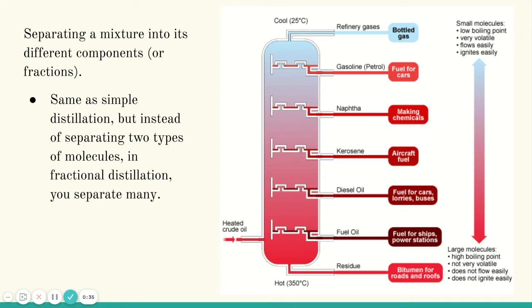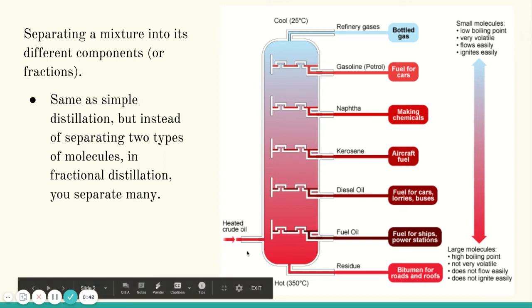When I say chains, that's all carbons bonded together. So you can have like 100 carbon chains, very very long. Basically the smaller the chain, the lower the boiling point it has.